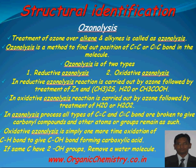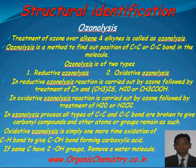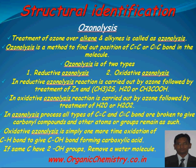In oxidative ozonolysis, all carbon-carbon double and triple bonds are broken to form carbonyl compounds while other atoms or groups remain intact. Ozonolysis is only used to find the position of carbon-carbon double and triple bonds. Oxidative ozonolysis involves one more oxidation of the carbon-hydrogen bond to give C-OH — that is, oxygen is inserted into the carbon-hydrogen bond forming carboxylic acid. If the same carbon has two OH groups, remove a molecule of water. Take the example of ethene: ethene on reductive ozonolysis gives two molecules of formaldehyde. If asked how many products are obtained, the answer is one product — formaldehyde. If asked total number of moles, the answer is two moles of formaldehyde.